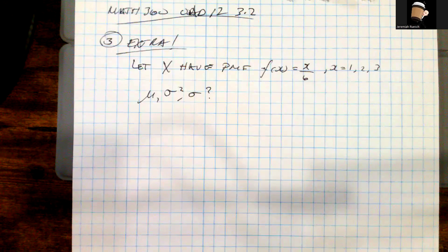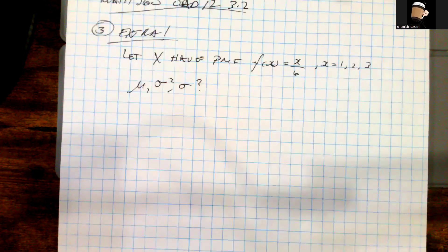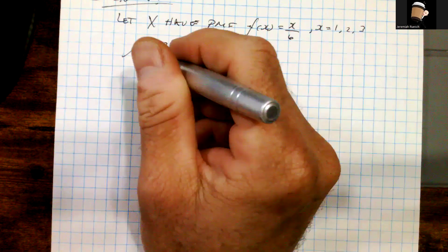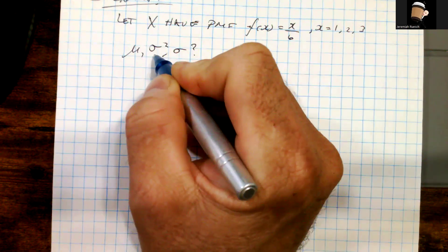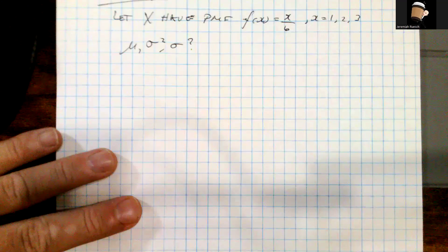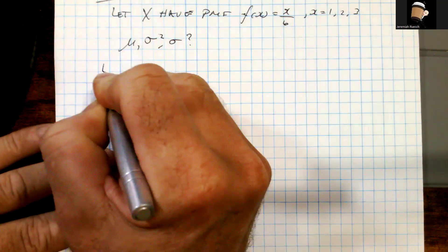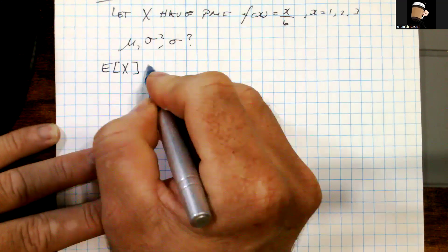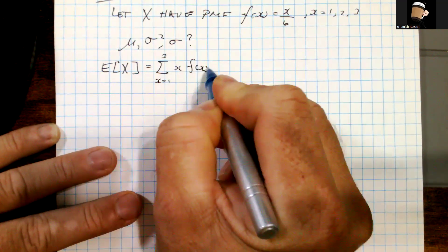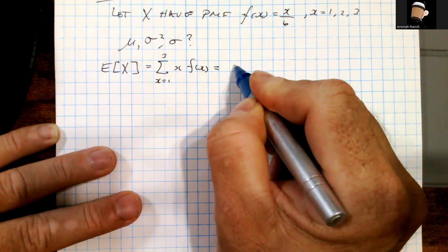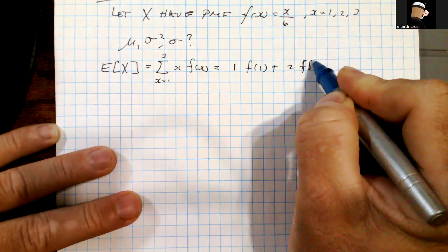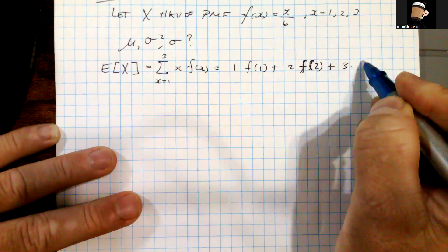Welcome to Example 3. In this example, we let X have PMF f(x) = x/6 for values x = 1, 2, and 3. We're going to compute the mean, standard deviation, and variance. So μ = E[X] equals the sum over x = 1, 2, 3 of x·f(x), which is 1·f(1) + 2·f(2) + 3·f(3).